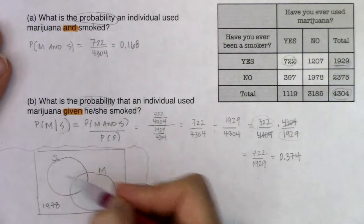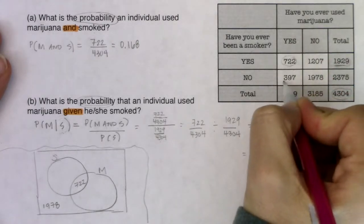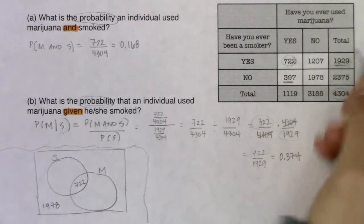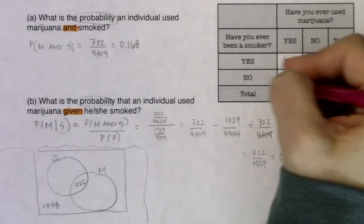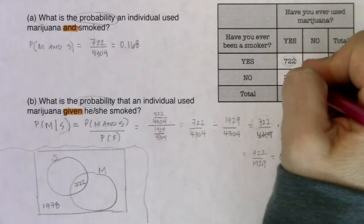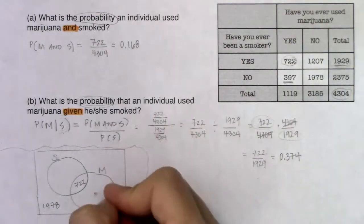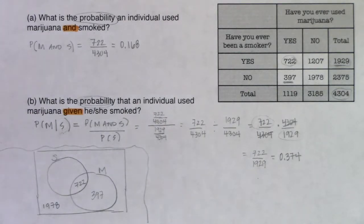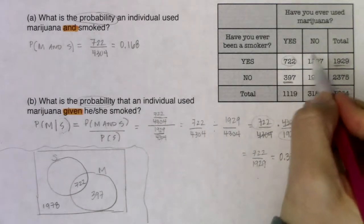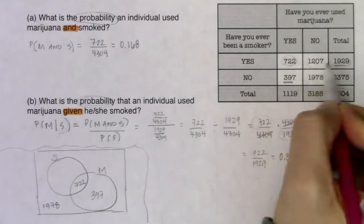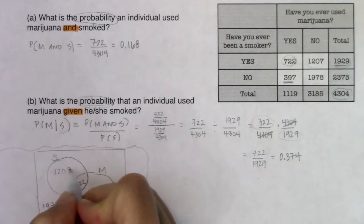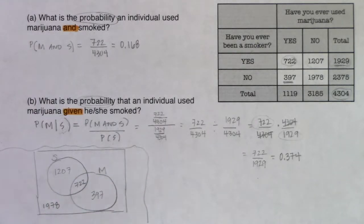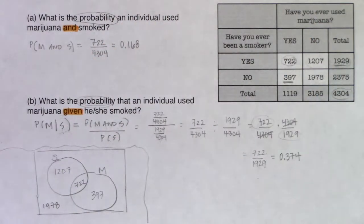There are four areas on a Venn diagram and four cells in the table — they map directly. The 397 folks said yes to marijuana but no to smoking, so they go in the marijuana-only section. The 1,207 folks said yes to smoking, no to marijuana, so they go in the smoking-only section. That's how we go from a table to a Venn diagram.